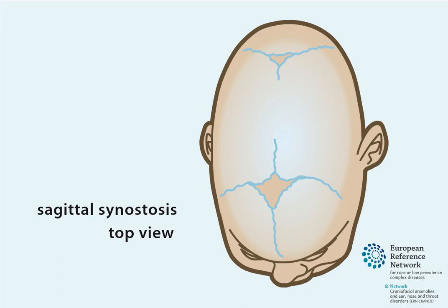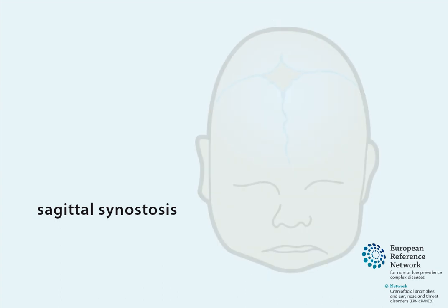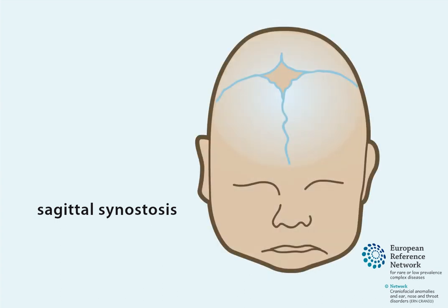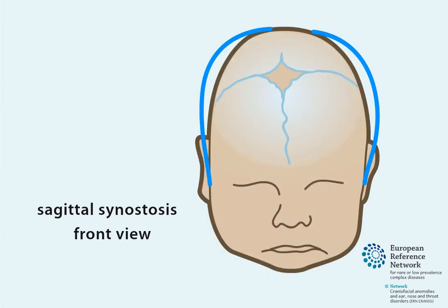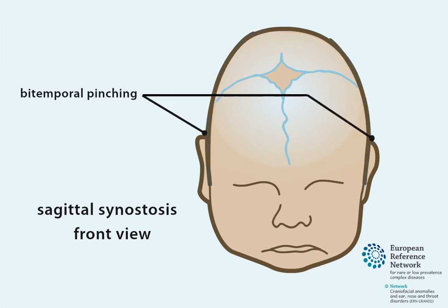Frequently, a ridge can be palpated along the closed sagittal suture. When looking at the front of the head, you notice the narrowing of the head and pinching at the temples, called bitemporal pinching.